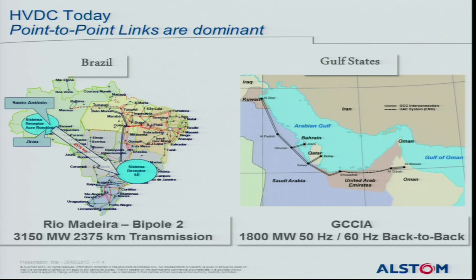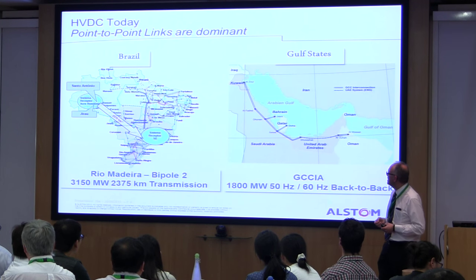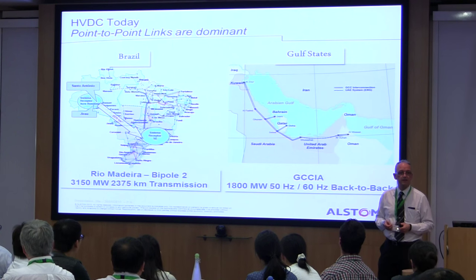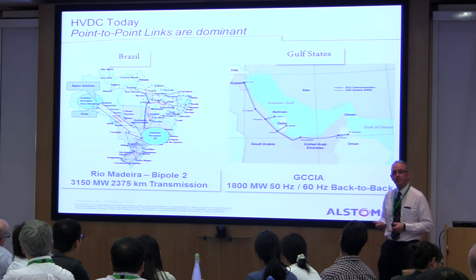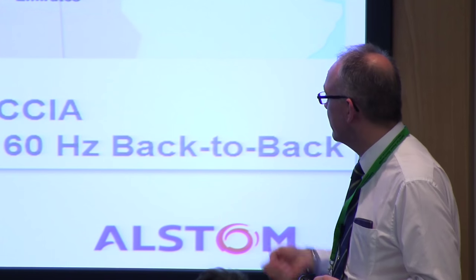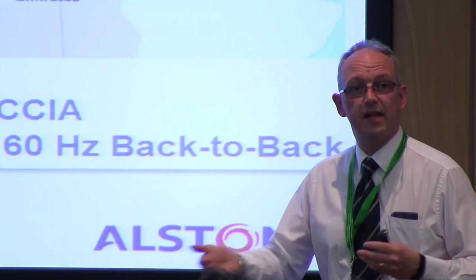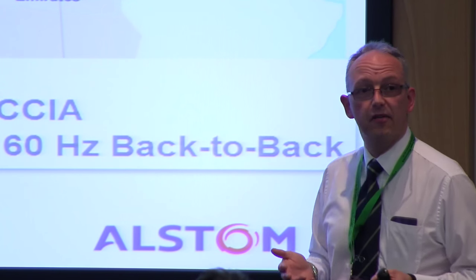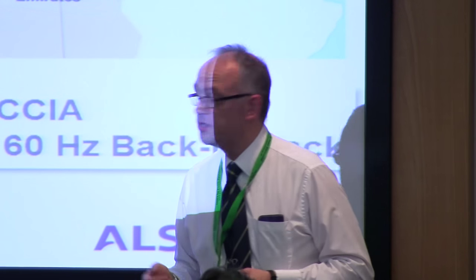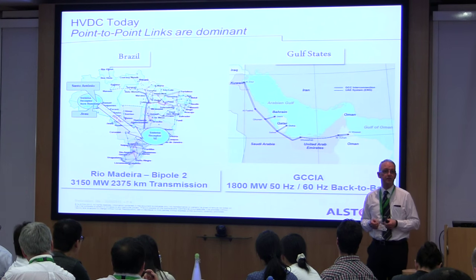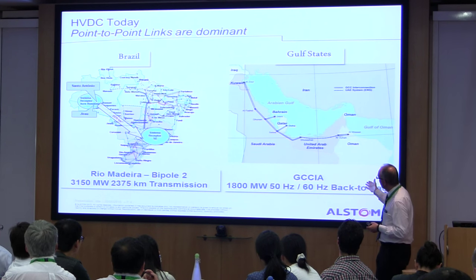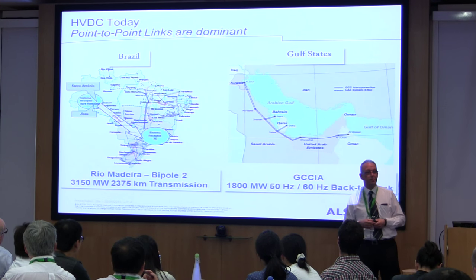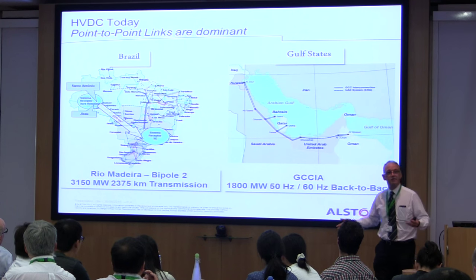The other example is the GCCIA scheme, where five countries wanted to interconnect their power grids. Four of those countries operate at 50 Hz; one country — Saudi Arabia — runs at 60 Hz. The only way Saudi could join that power pool was to use HVDC in a back-to-back arrangement. The scheme on the left has a transmission distance of 2,375 kilometres; the scheme on the right is about eight metres of aluminium bus bar — but functionally they're doing the same thing.